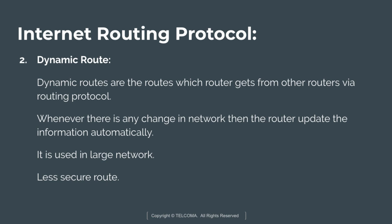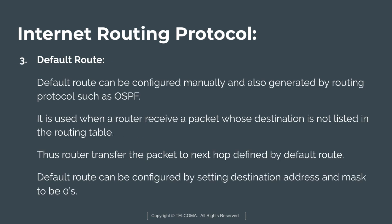Dynamic routes are the routes which a router gets from other routers via routing protocol. Whenever there is any change in the network, the router updates the information automatically. Dynamic routing is used in large networks and it is a less secure route.